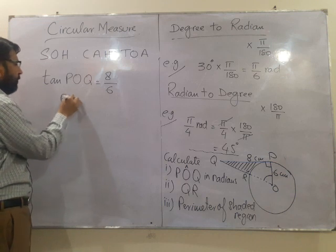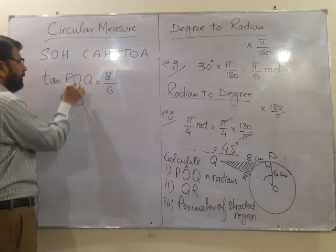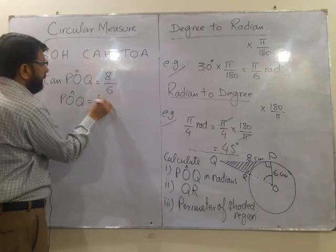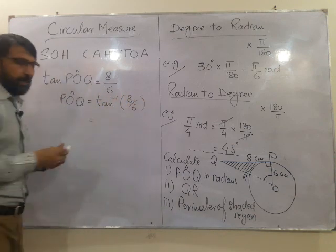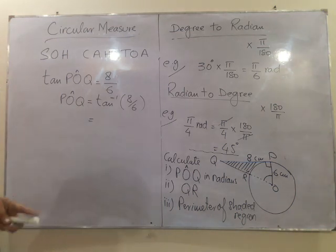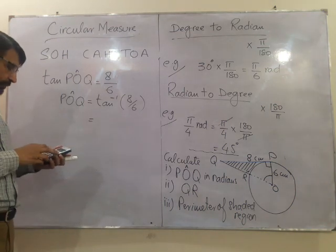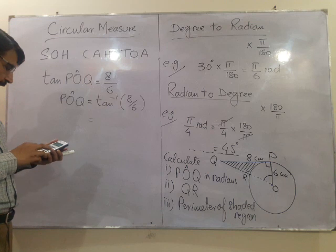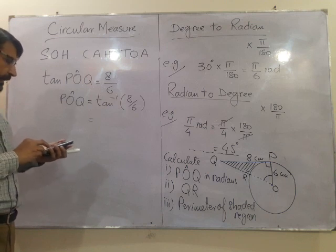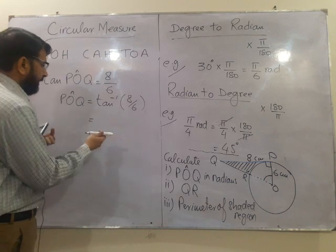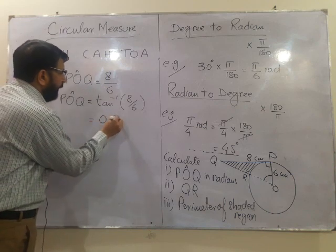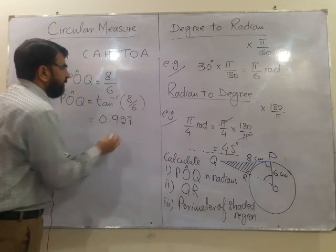So tan POQ is going to be opposite which is 8 over 6 which is adjacent. So POQ is going to be tan inverse 8 divided by 6. And our calculator is going to give you a quick answer. So shift tan, 8 divided by 6, and this gives us 0.927 radians.